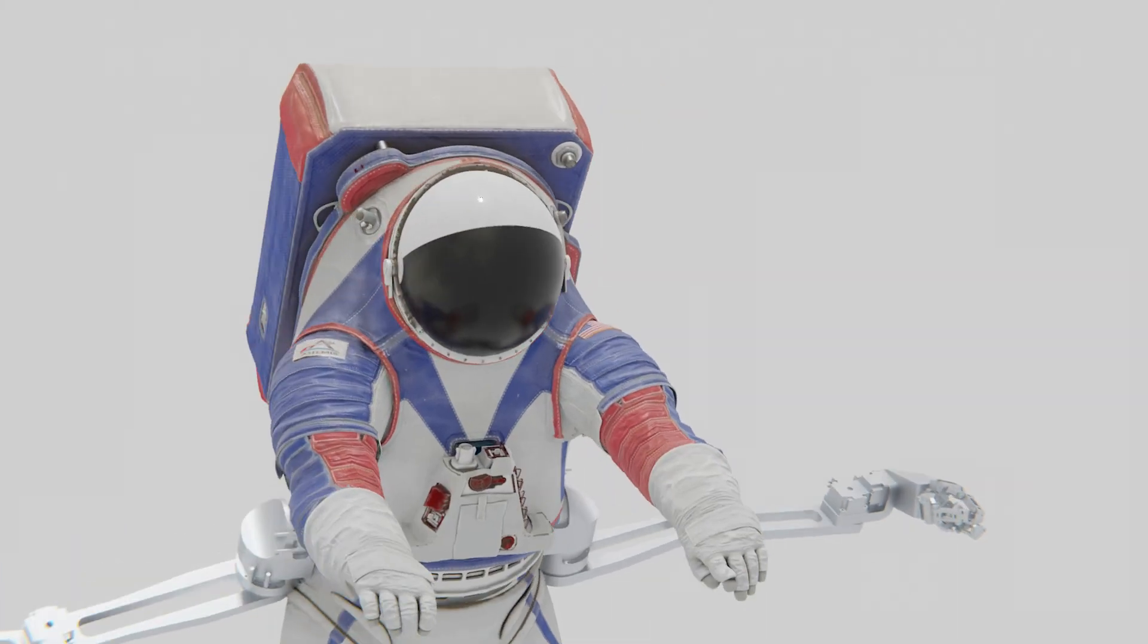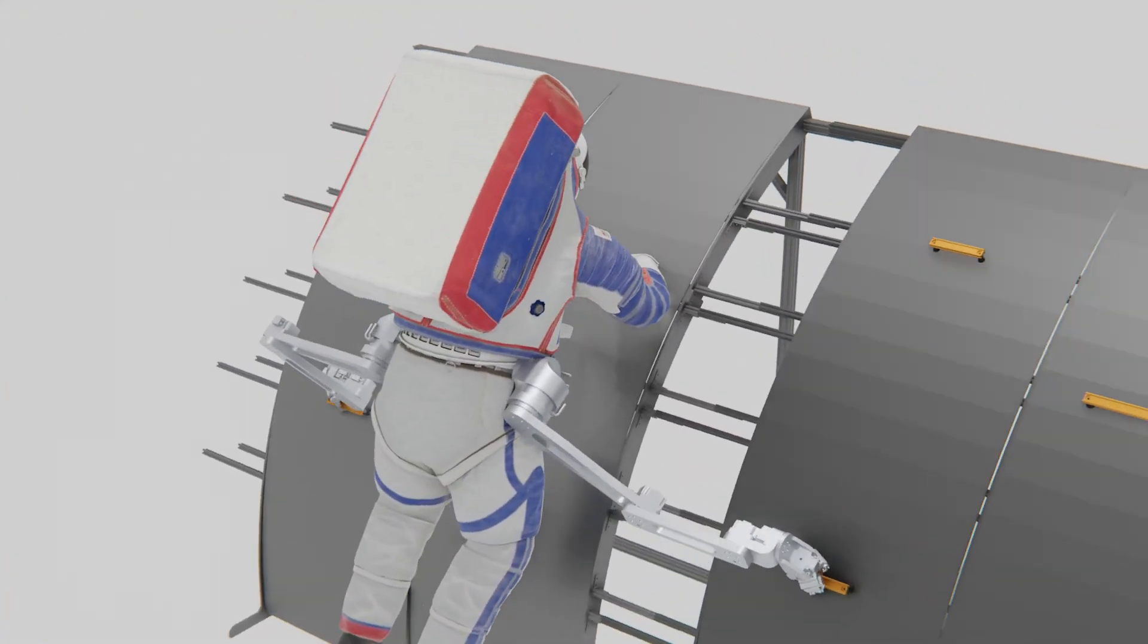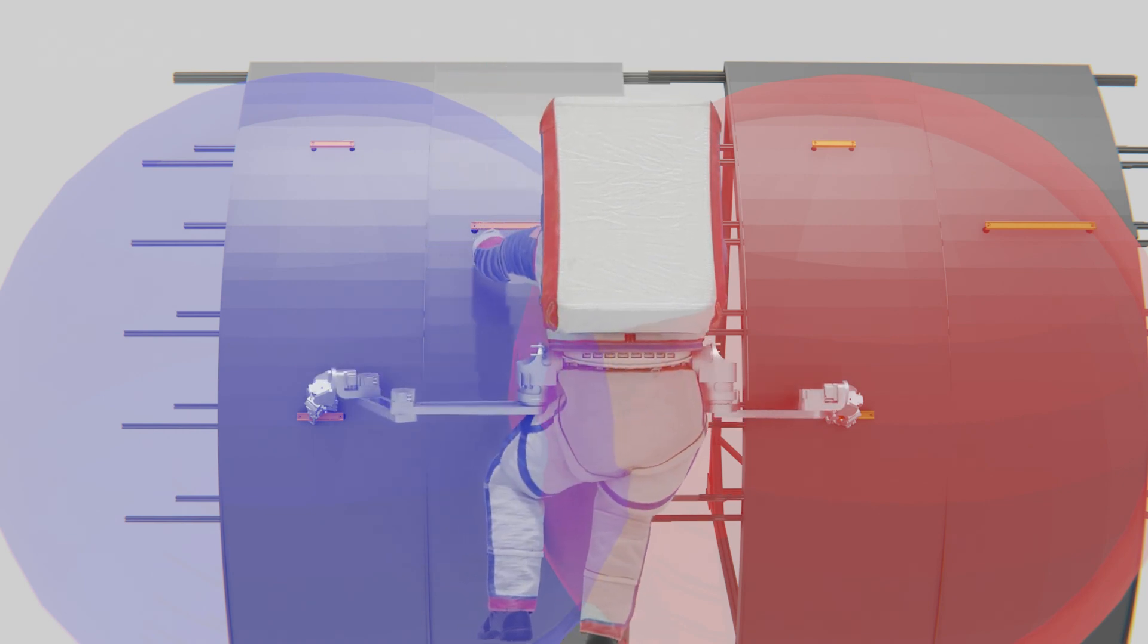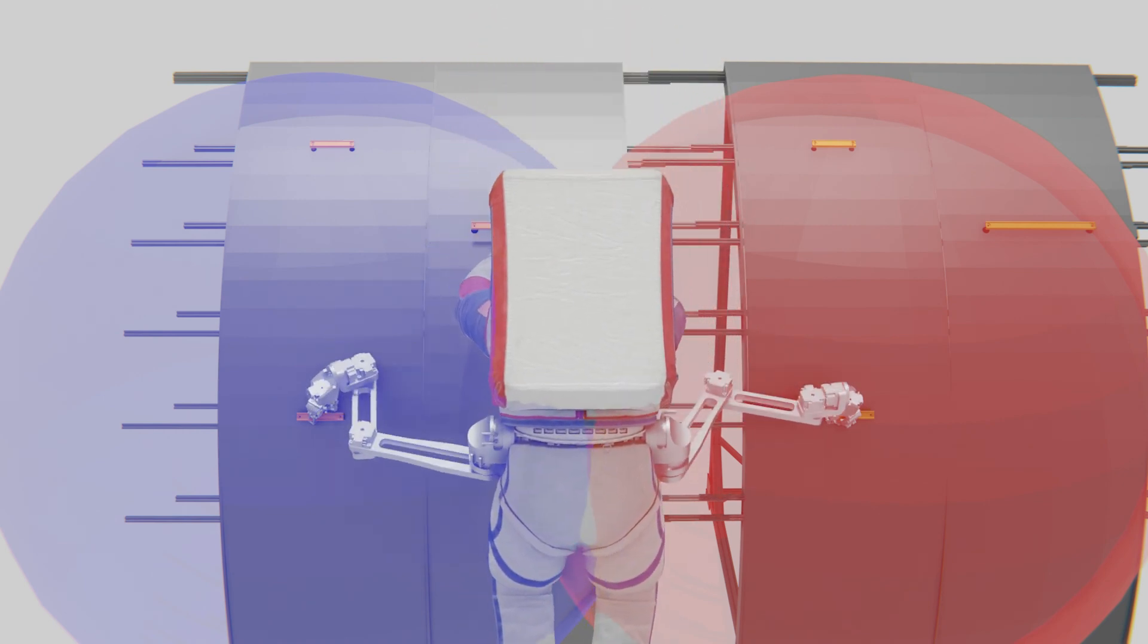To validate these claims, we first looked at a MATLAB simulation of the workspaces of the superlimbs. By overlapping the workspaces of each superlimb, we can find the working envelope for astronauts when they are conducting worksite operations.